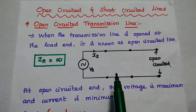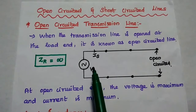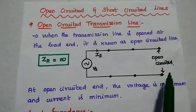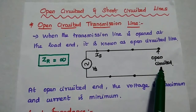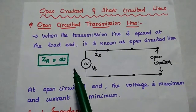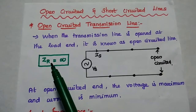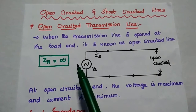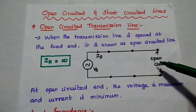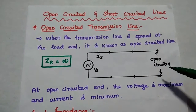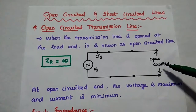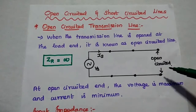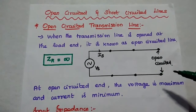This is the diagram of open circuited line. Here, Vs represents sending end voltage and Is represents sending end current. The load end is open circuited. Since it is open circuited, its impedance becomes infinite — that is, the receiving end impedance of the open circuited end becomes infinite. Since the impedance is infinite, the voltage is maximum but the current is minimum. For the open circuited line, the voltage is maximum, current is minimum, and its impedance is infinite.